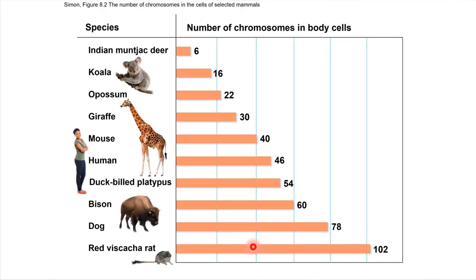By way of interest, different species have different numbers of chromosomes in their cells. We've already mentioned that humans have 46 chromosomes total in the cells of our bodies, but other organisms have fewer or even way more. This very small organism, the rat, actually has 102 chromosomes in each of its body cells. So the number of chromosomes does not necessarily correlate with the size of the organism as a whole.